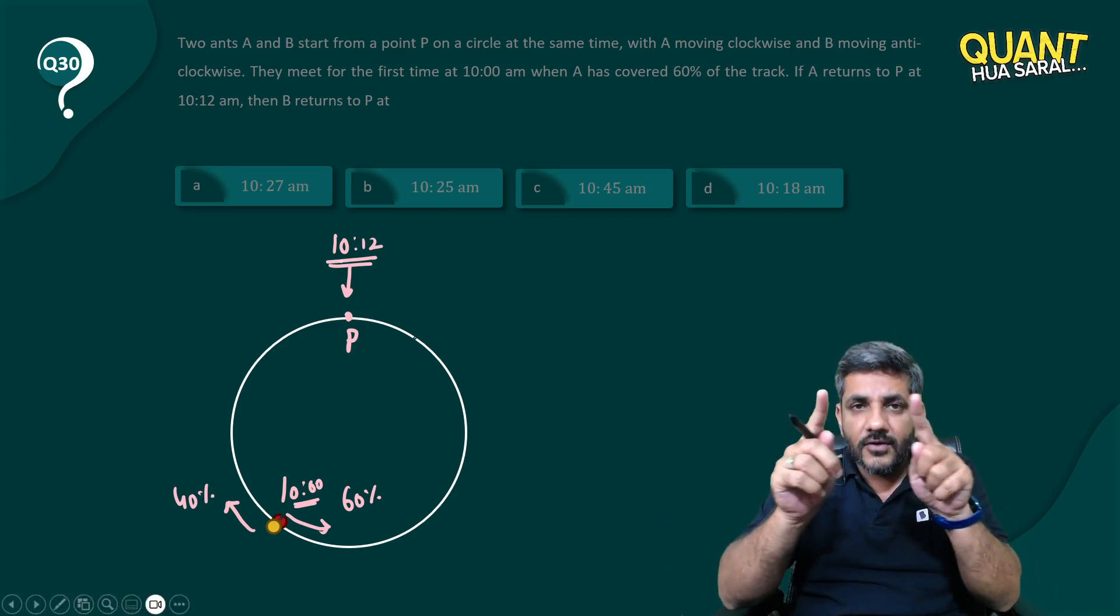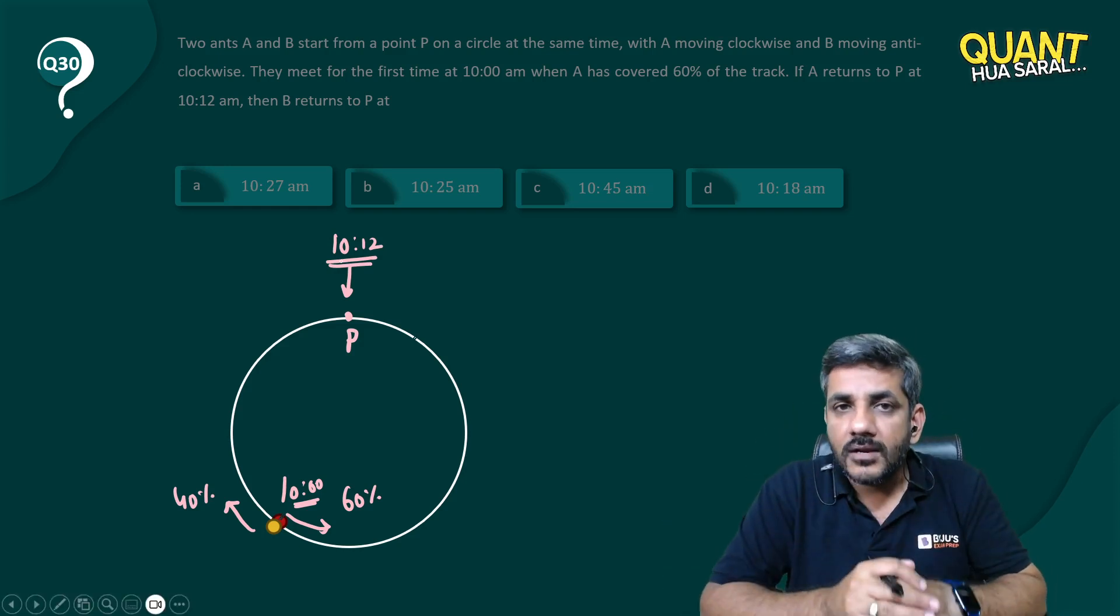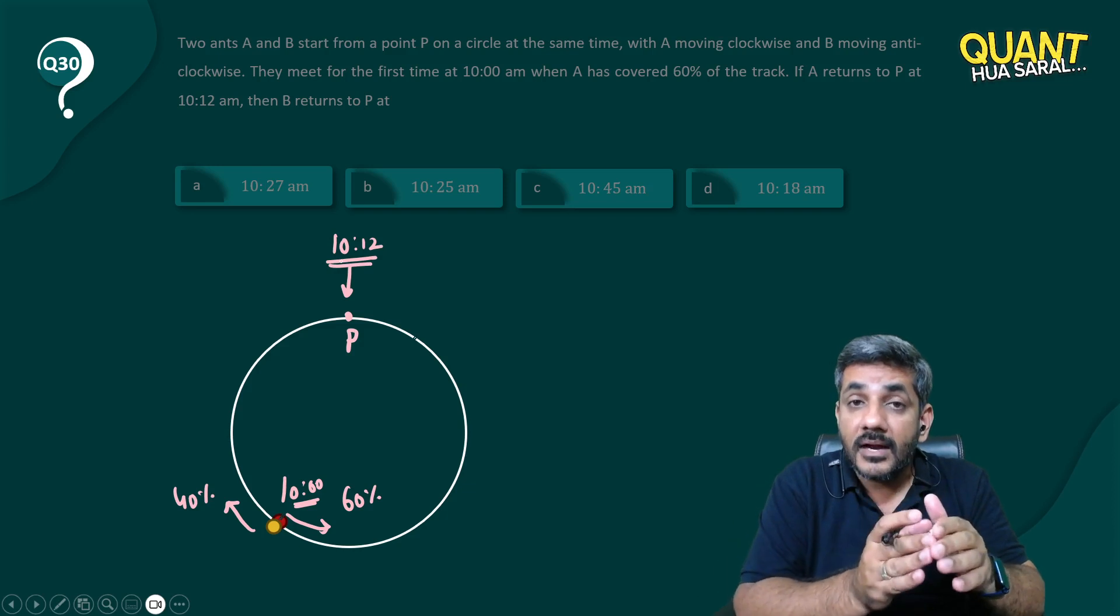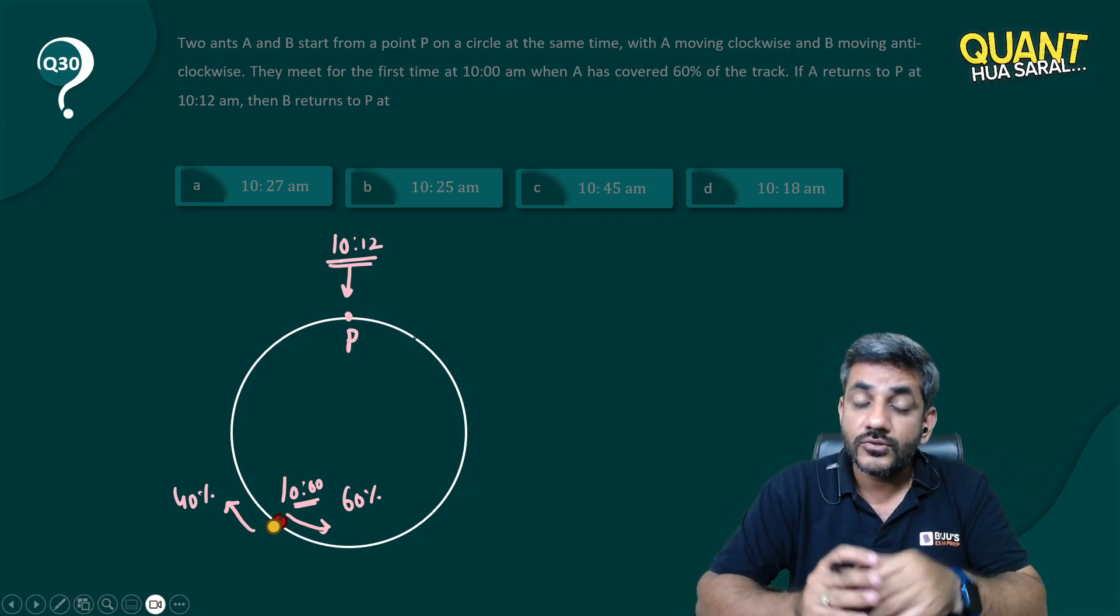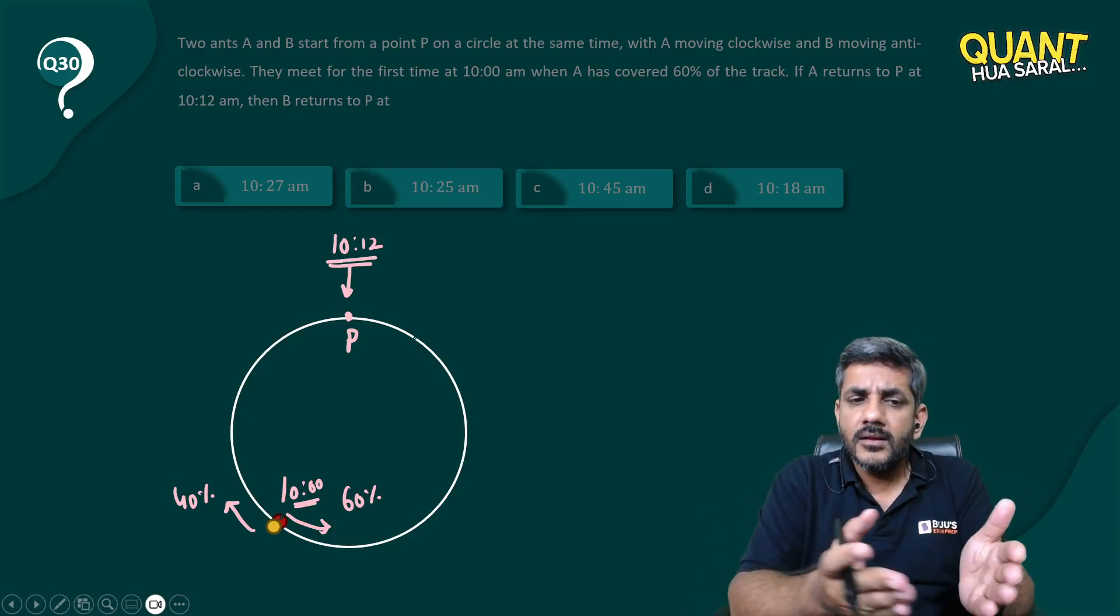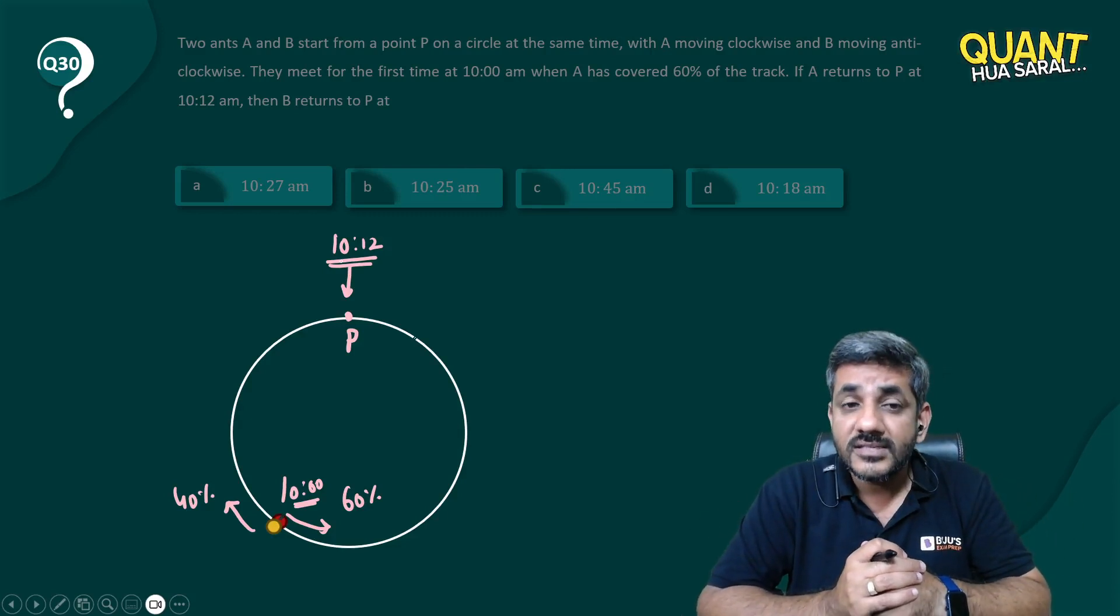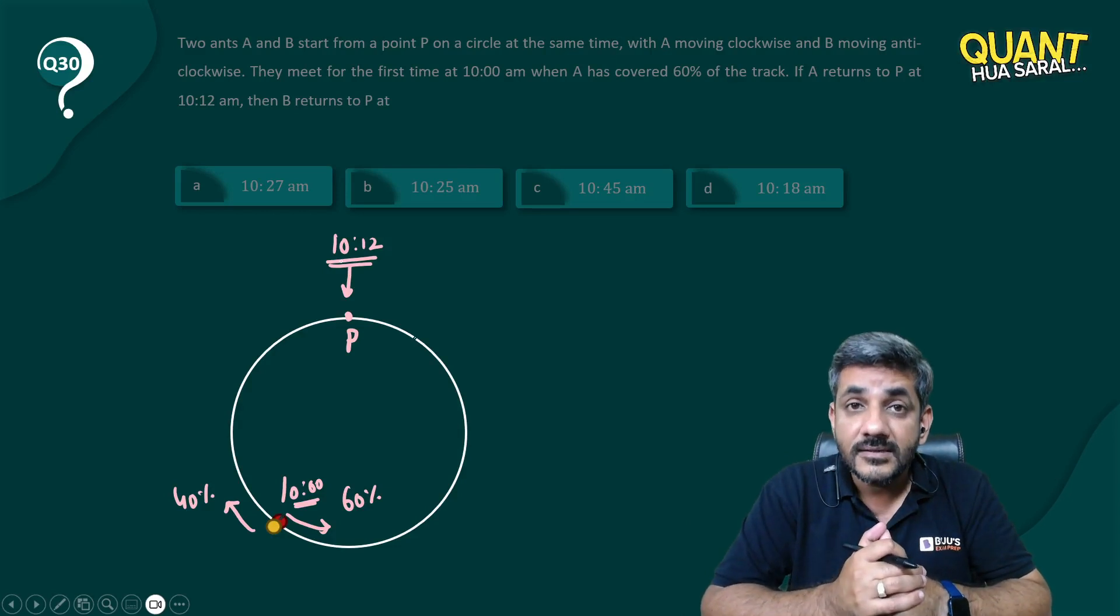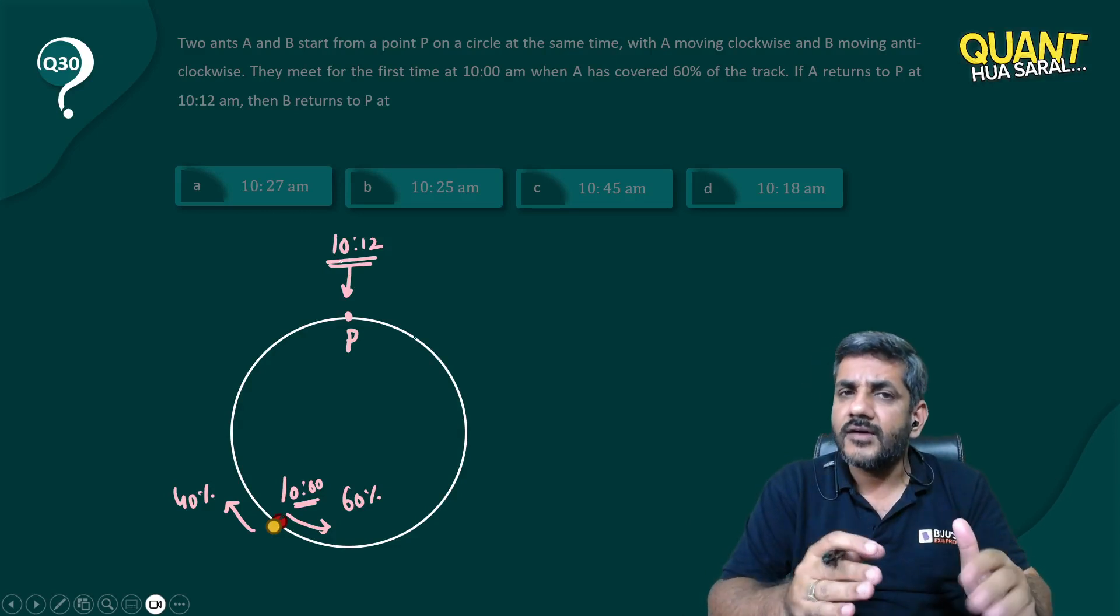When they started from the same point, they met at a particular point, and when they met A had covered more distance. So can I say that A is running faster? That's obvious - they started at the same time, but when they met A had covered more distance. So that means A is running faster than B.